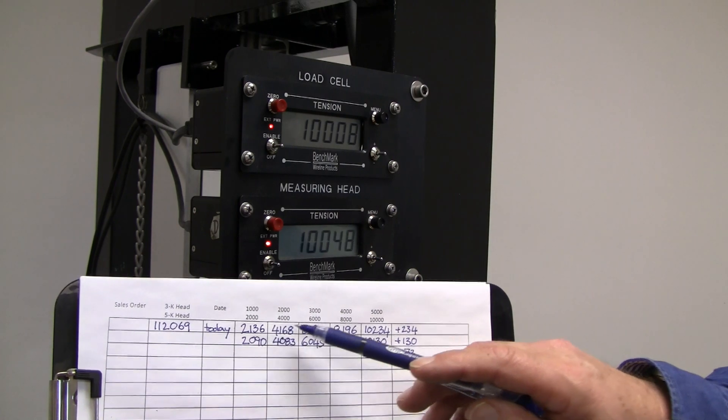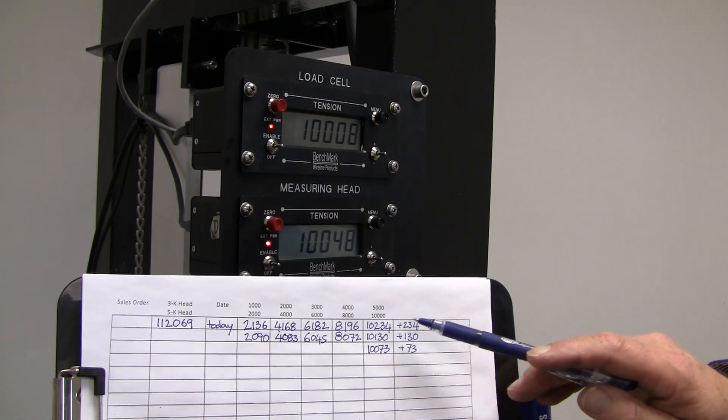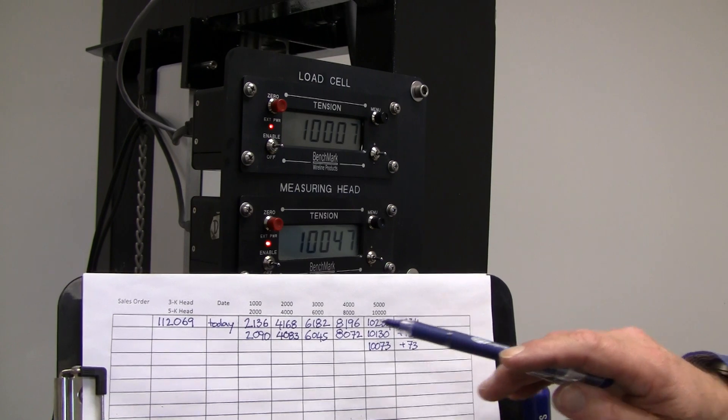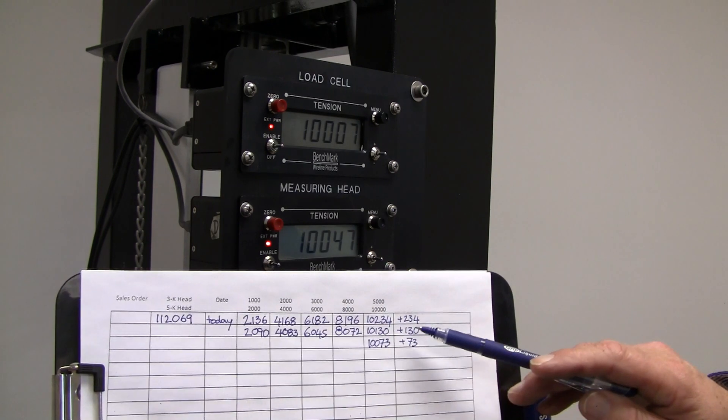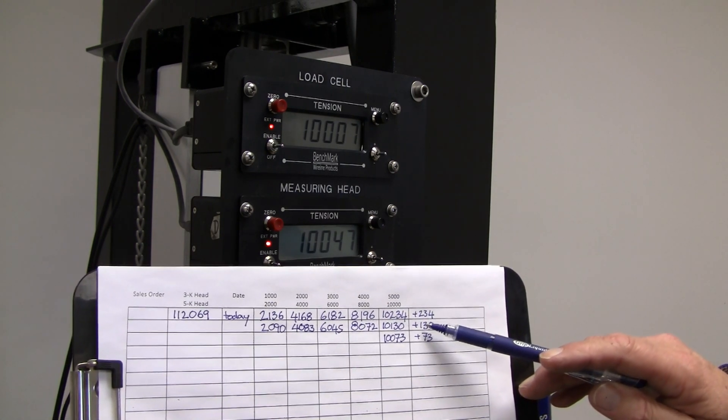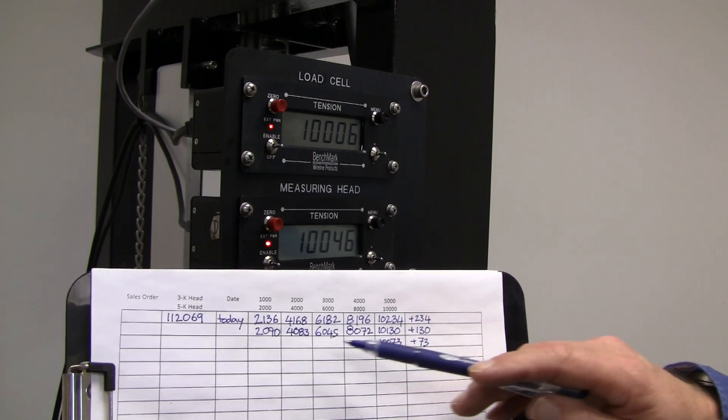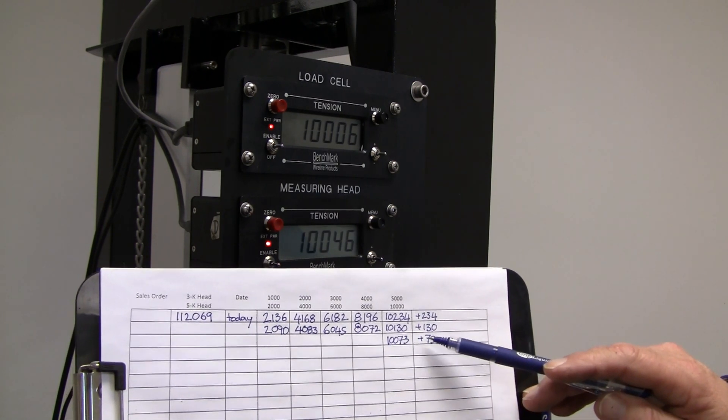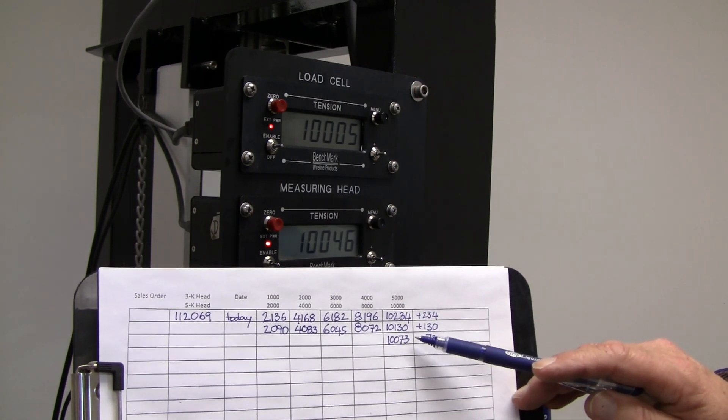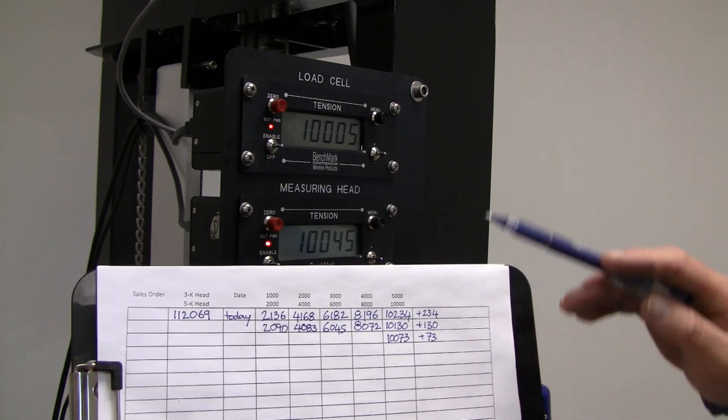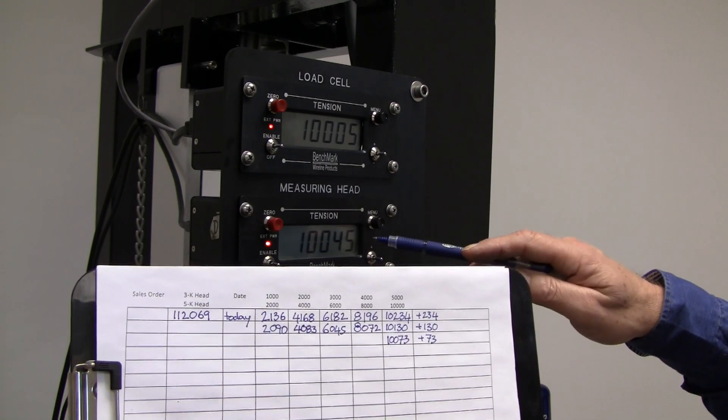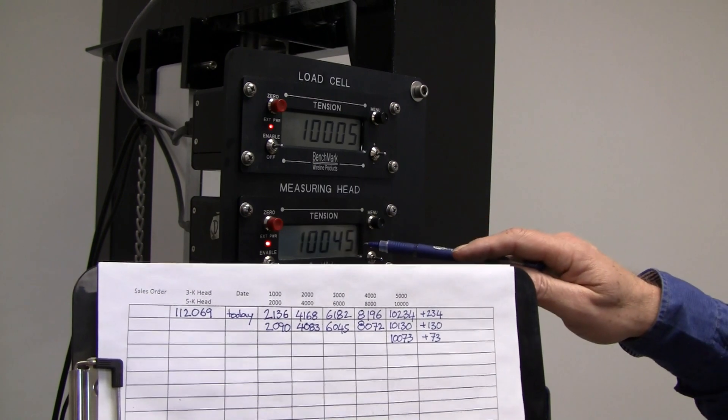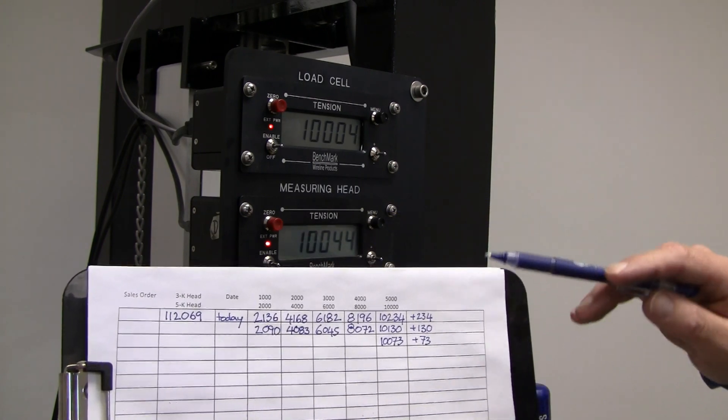In this example, the greatest variance was 234, which was a difference of 2.3%. The acceptable range is plus or minus 3%. Furthermore, with each round of tests, the variance between the load cell and the load pin decreased, meaning that the accuracy of the load pin increased with repeating tests. This would indicate that the load pin operates within acceptable variances and is working properly.